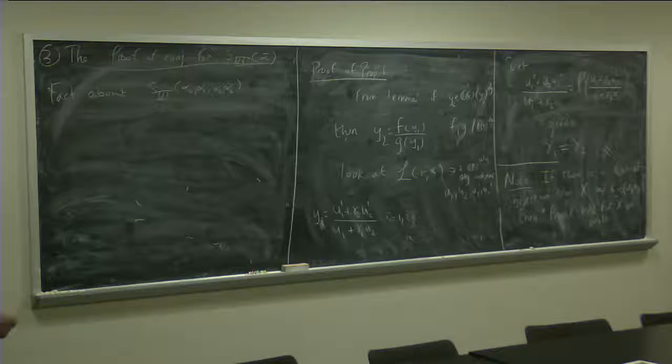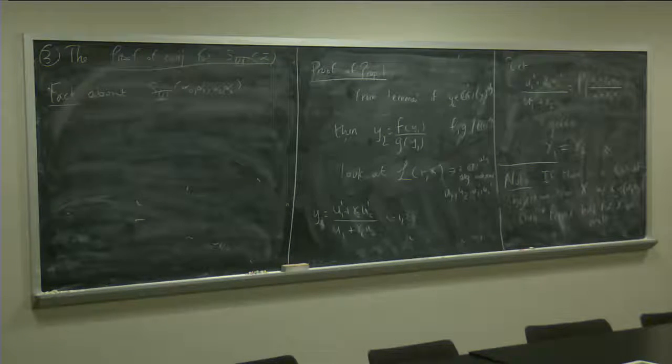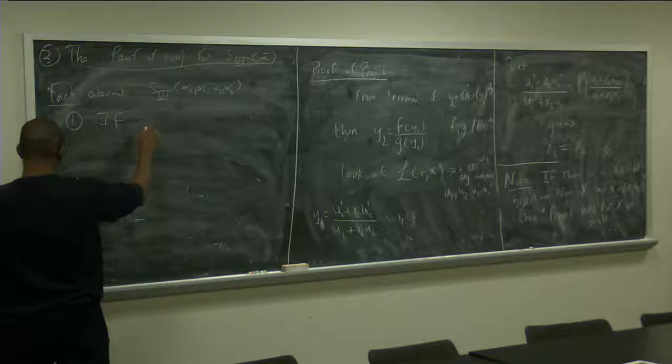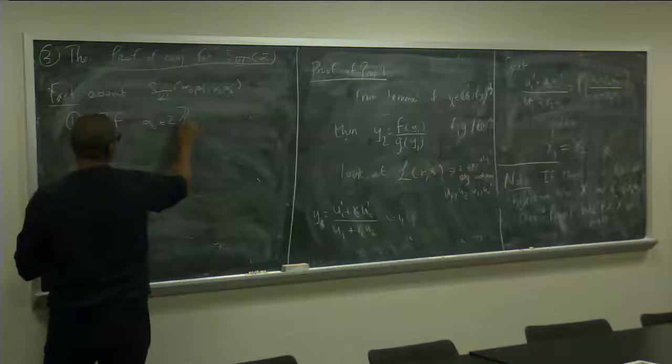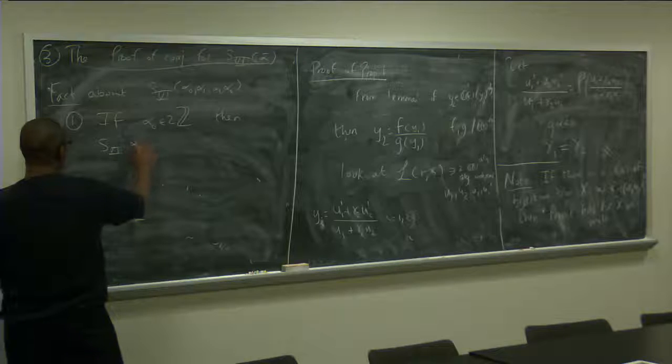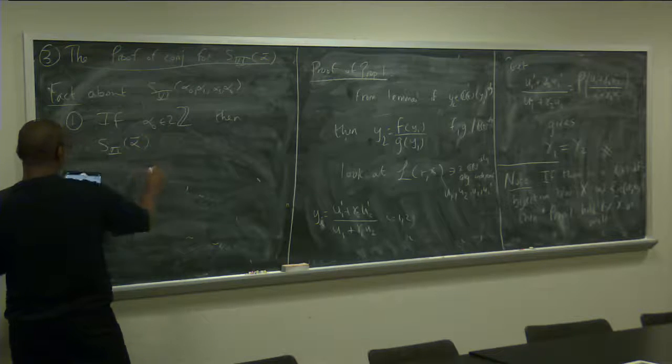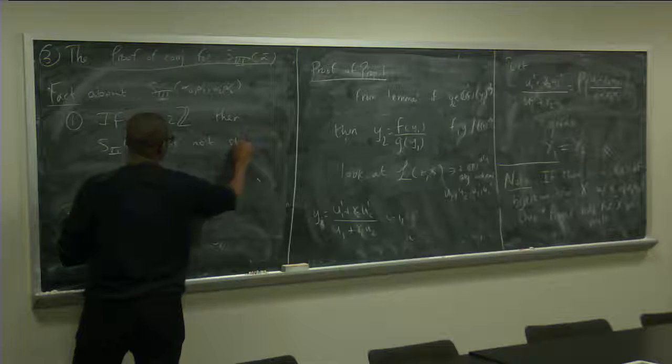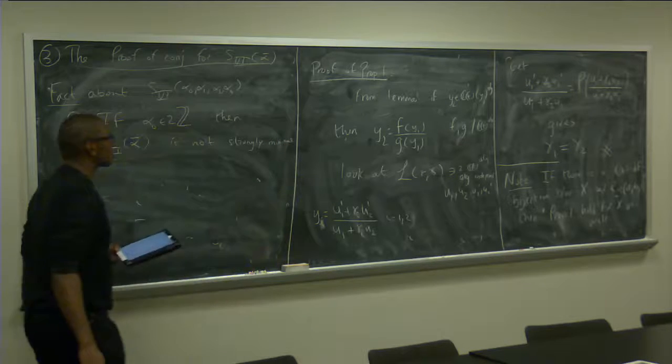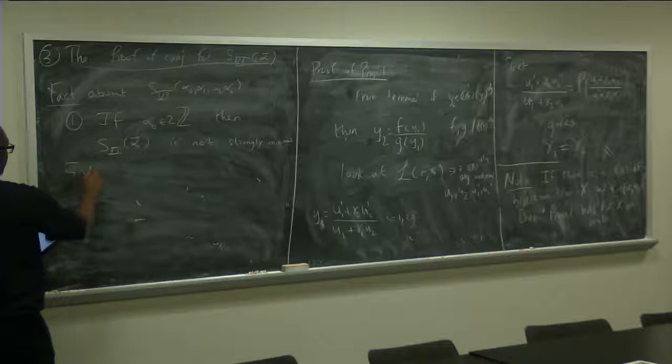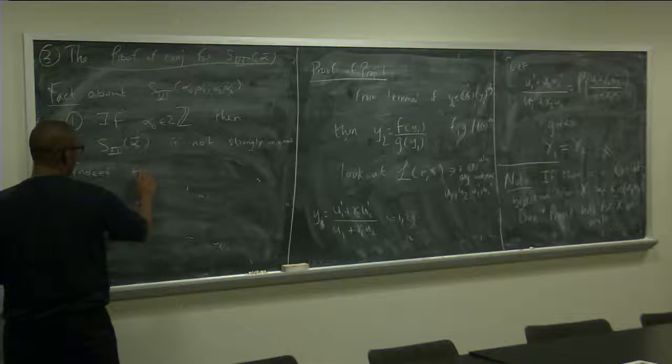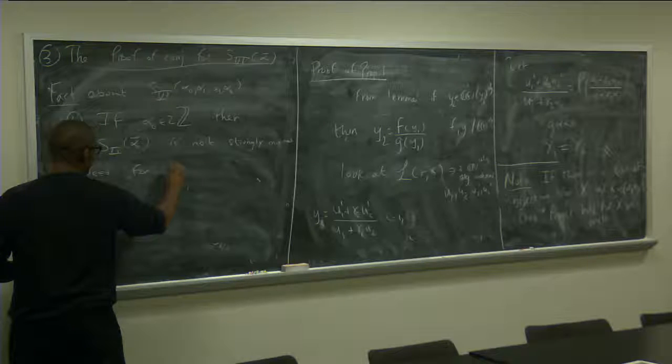Note that alpha 2, again, is related once you fix those four parameters. So, the first one is, if alpha node is in 2Z, then S6 alpha is not strongly minimal.